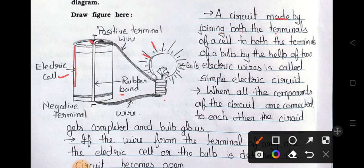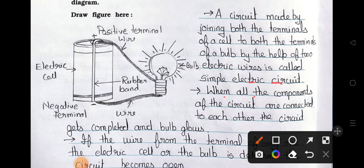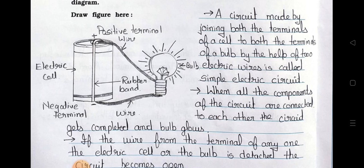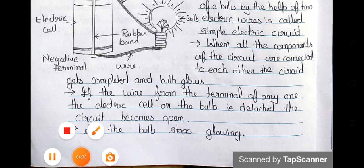Answer: a circuit made by joining both terminals — positive terminal and negative terminal — of a bulb by the help of two electric wires is called a simple circuit. When all components of the circuit are connected to each other, the circuit gets completed and the bulb glows. If the wire from any terminal of the electric cell or bulb is detached, the circuit becomes open and the bulb stops glowing.